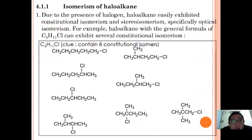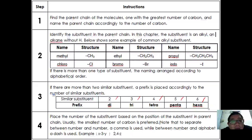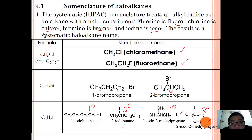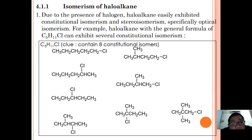Due to the presence of halogens, haloalkanes can exhibit constitutional isomerism as well as stereoisomerism — specifically optical isomerism. Looking back at the C4H9I examples, 2-iodobutane already exhibits optical isomerism. For a haloalkane to exhibit optical isomerism it must have a chiral carbon atom, and the minimum number of carbons required is four.